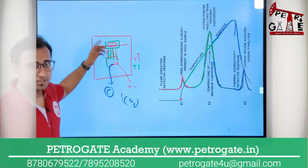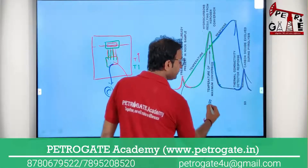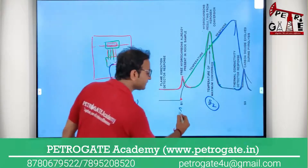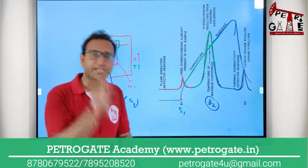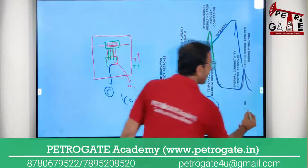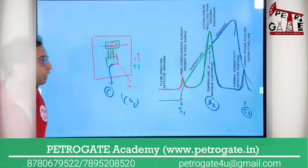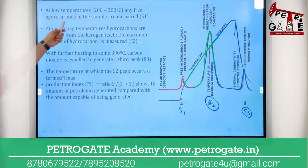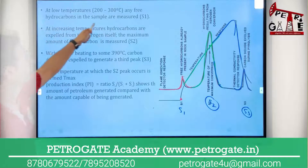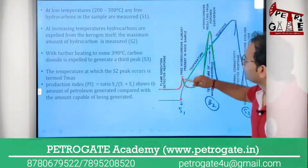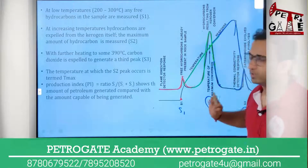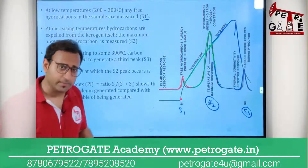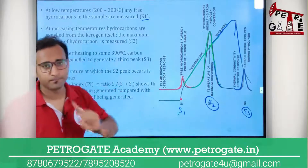So the S1 peak represents free hydrocarbons already present in the source rock before temperature increase. The S2 peak represents hydrocarbon converted from the kerogen. The S3 peak represents the amount of CO2 released. At low temperature — around 200 to 300°C — any free hydrocarbon in the sample is released, represented by the S1 peak.